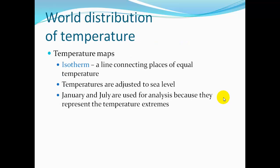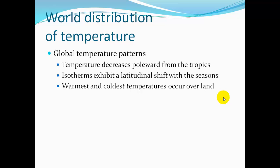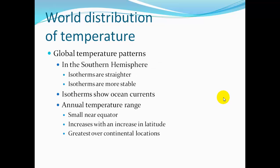Temperature maps use isotherms — lines connecting places of equal temperature. Temperatures are adjusted to sea level. January and July are used for analysis because they represent temperature extremes. Global temperature patterns show that temperature decreases poleward from the tropics. Isotherms exhibit a latitudinal shift with the seasons — a zero-degree line may shift northward in summer and southward in winter. Warmest and coolest temperatures occur over land. In the southern hemisphere, isotherms are straighter and more stable and reflect ocean currents, since water impacts air temperature.